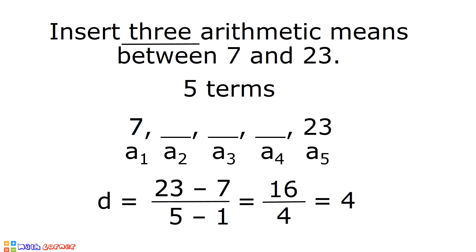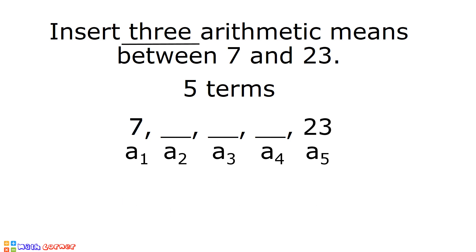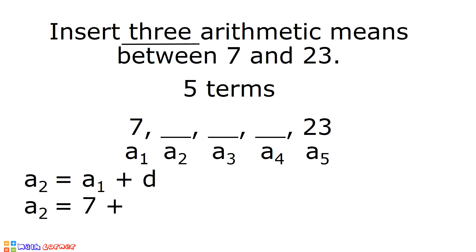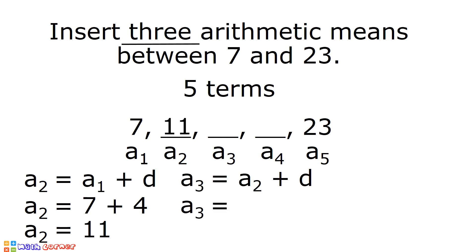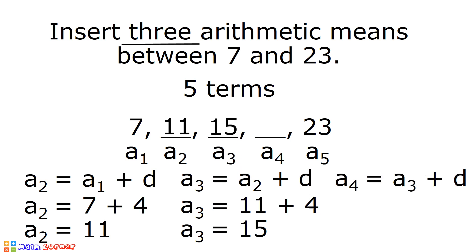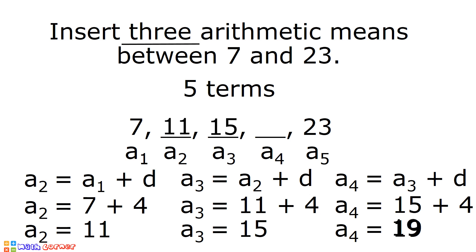After solving for the common difference, let us now solve for a2. a2 is equal to a1 plus the common difference: 7 plus 4 is equal to 11. 11 is our a2. To solve for a3, we add the second term and the common difference: 11 plus 4 is equal to 15. That is our third term. To solve for a4, we add a3 and the common difference: 15 plus 4 is equal to 19. The three arithmetic means between 7 and 23 are 11, 15, and 19.